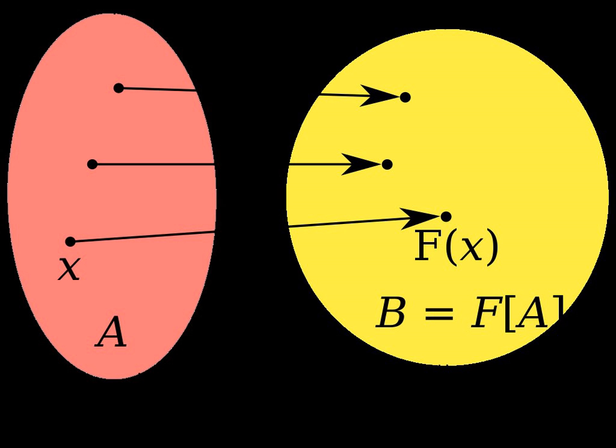This can be seen as a principle of smallness. The axiom states that if A is small enough to be a set, then F[A] is also small enough to be a set. It is implied by the stronger axiom of limitation of size.